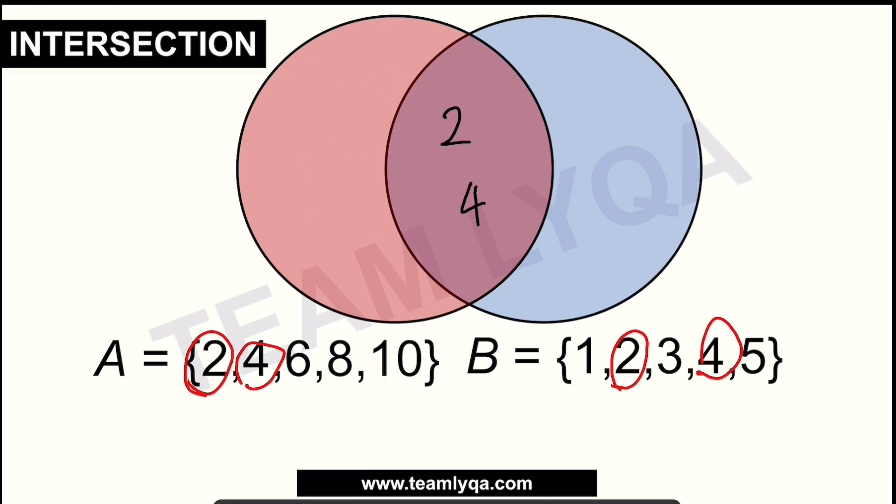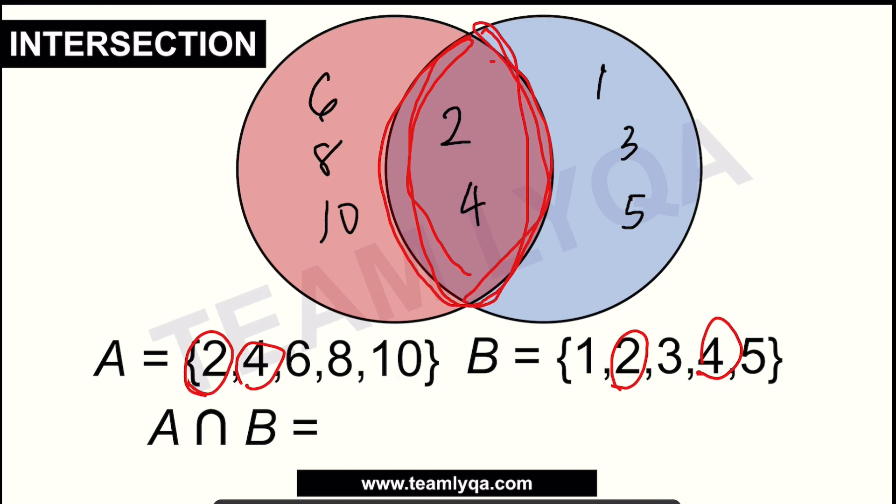So the 4 is in the middle too. Then 6, 8, 10 are unique here. 6, 8, 10. Here you have 1, 3, and 5. Now, if we're looking for the intersection of set A and B, we're looking for the ones in both. So if I shade it, it's this. Just this. Just these in the middle. The shared ones. The ones in A that are also in B.